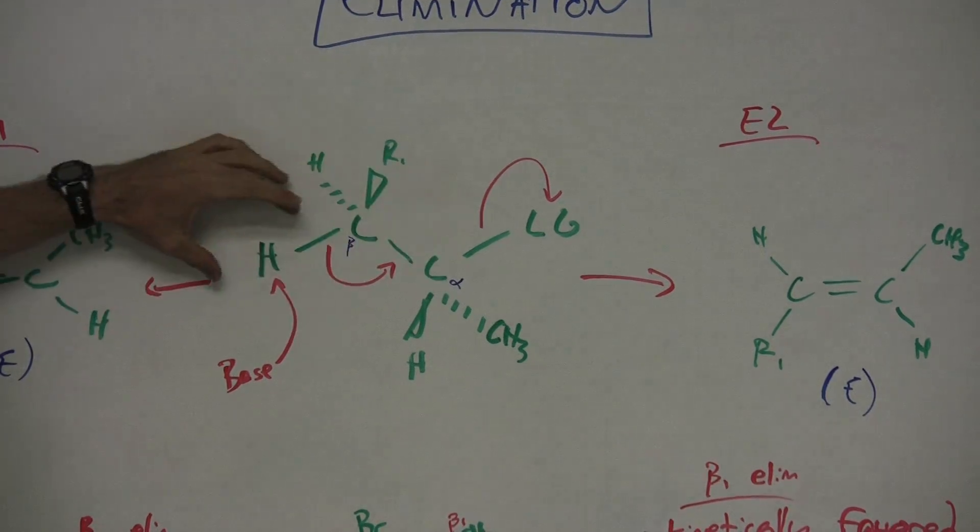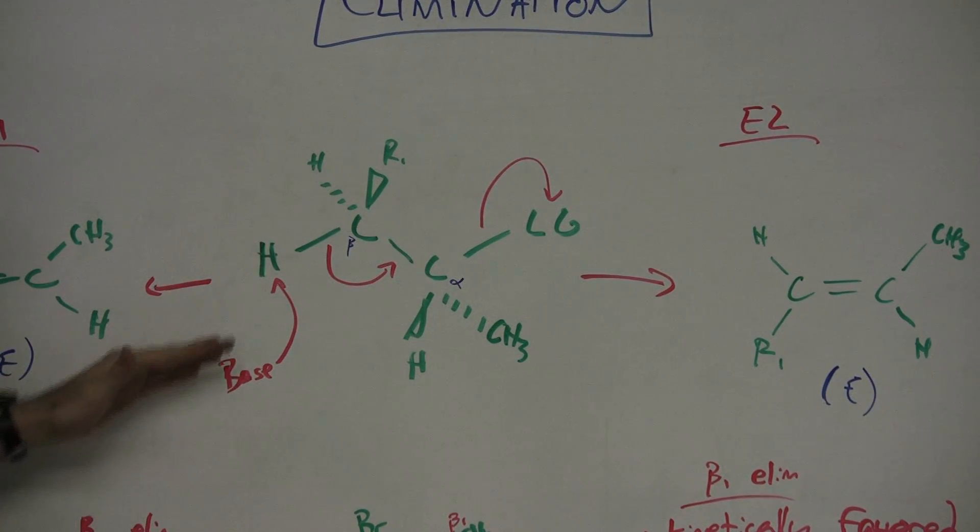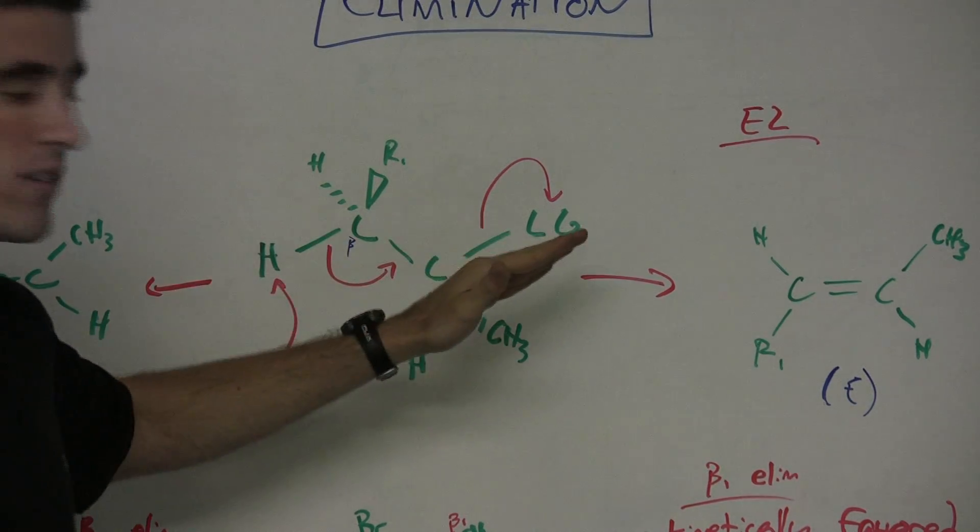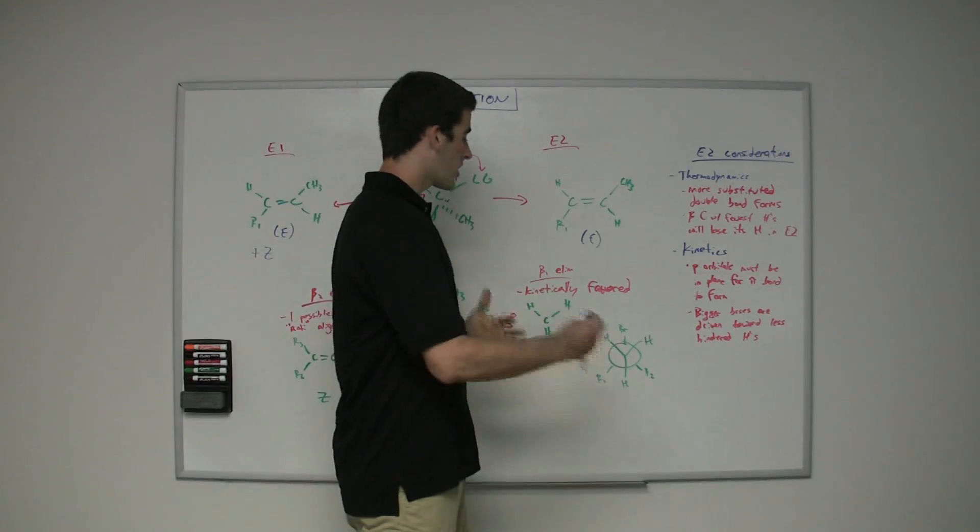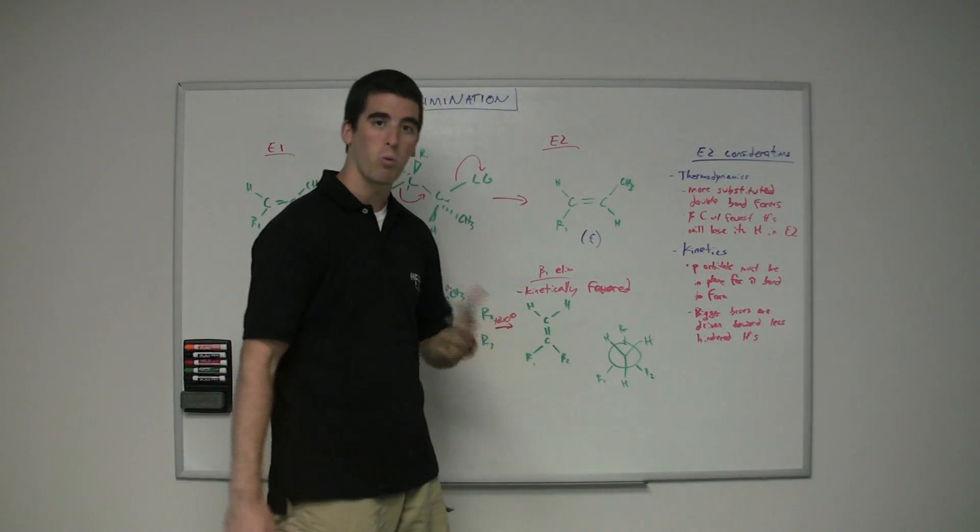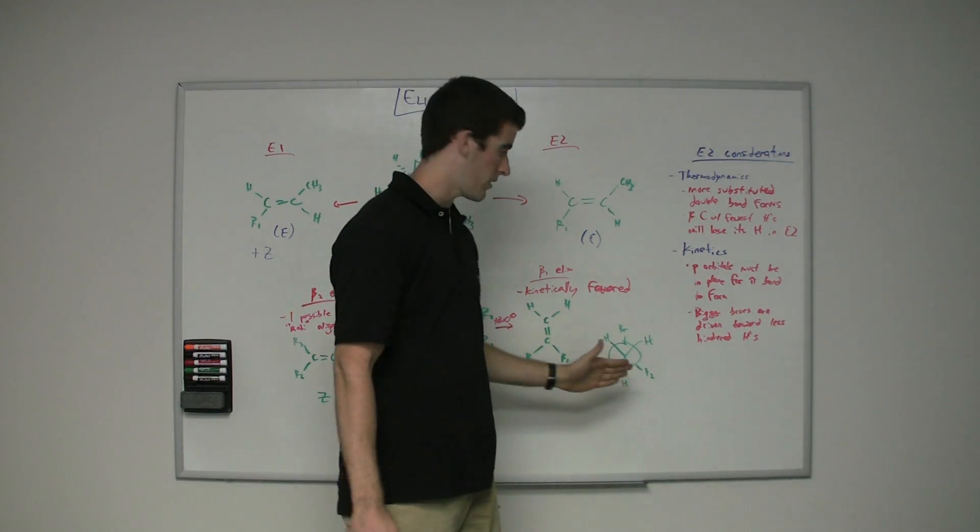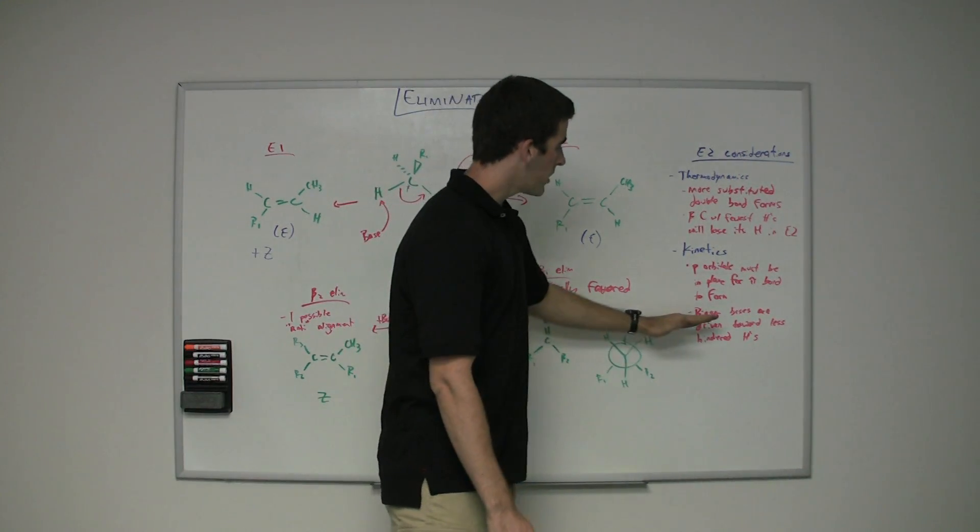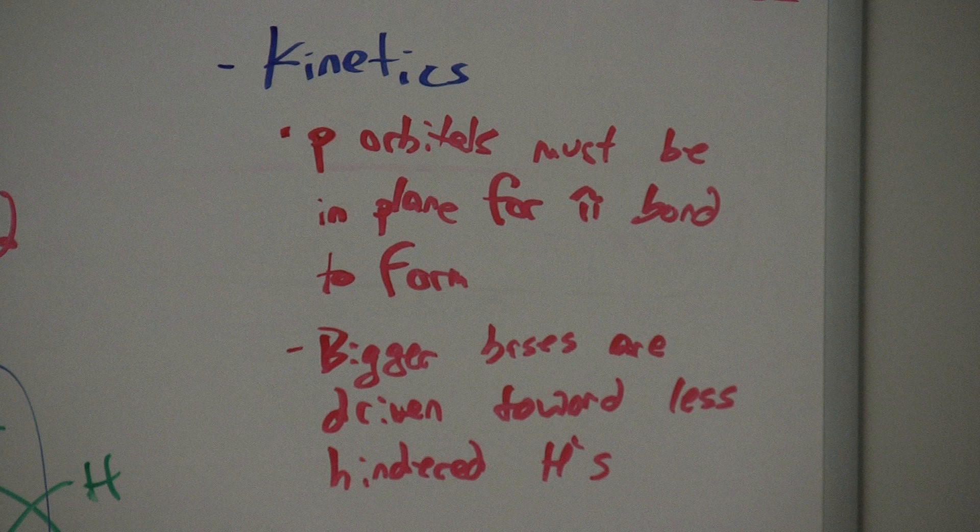The P orbitals were in the plane together. This was anti to this, and therefore it's going to happen faster to eliminate this H and kick off the leaving group. That's what we're going to be looking at here with Newman's. Newman's, if you recall from previous videos, you can really look at the spatial arrangement and you can see that things are really lined up 180 degrees together. So you have a kind of anti-alignment there. I'll explain that in a bit. But what to note with kinetics here is that bigger bases are driven toward less hindered Hs.